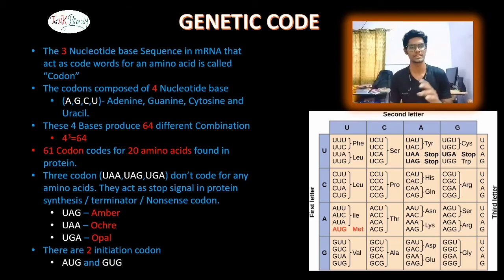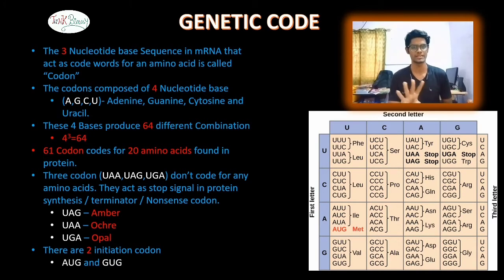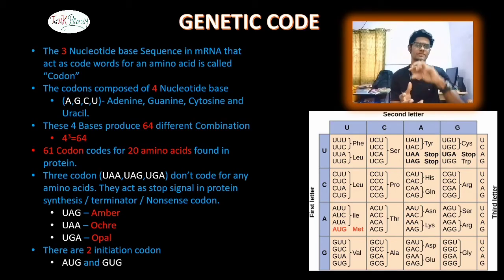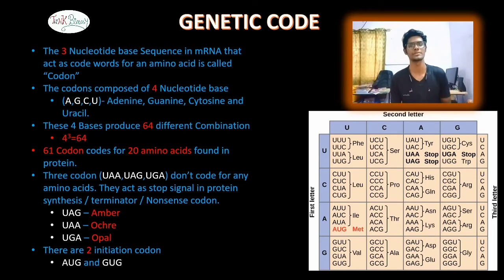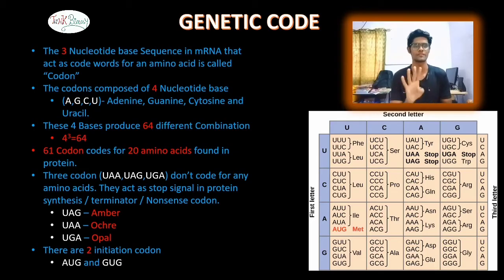Now, these 4 bases produce 64 different combinations. We have 4 bases taken in groups of 3, so 4 to the power of 3 gives us 64 combinations.